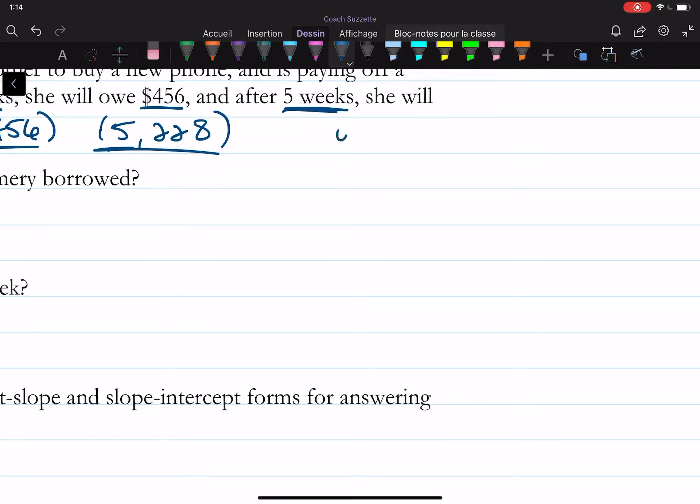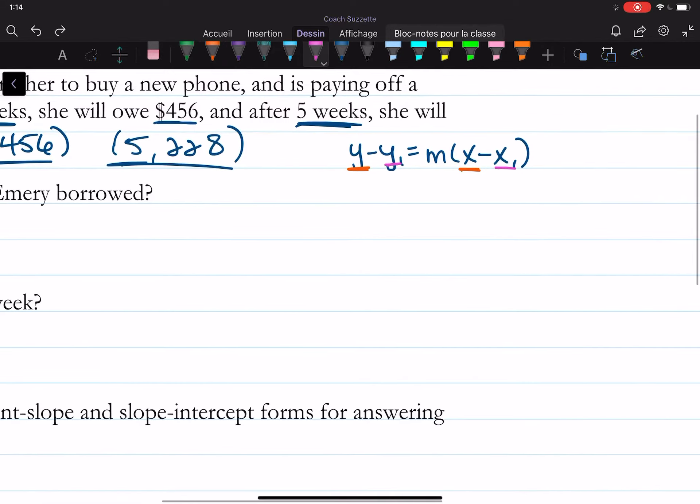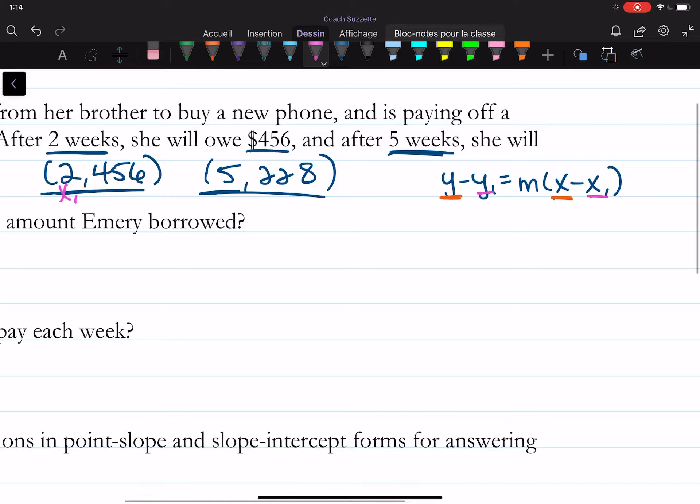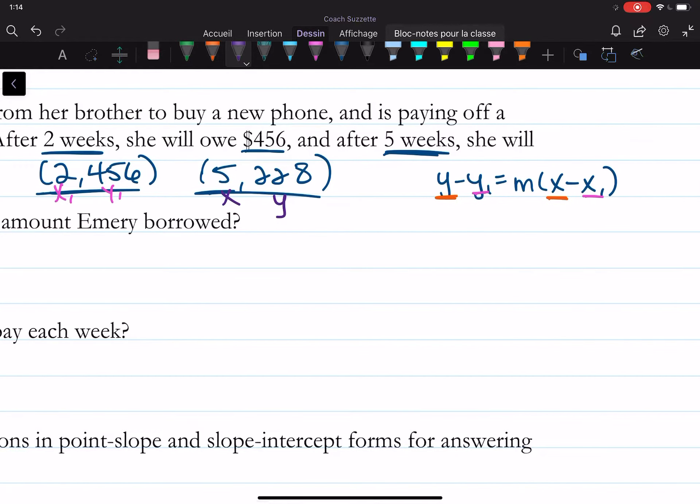Recall that point-slope form is y-y₁ equals m times the quantity x-minus x₁. And if I know two points, these are the coordinates for one point, these are the coordinates for the second point, we can find what's missing. Okay, so let's say the coordinates of the first point, x₁, x-sub-1, y-sub-1, and then the xy are these, then let's substitute.